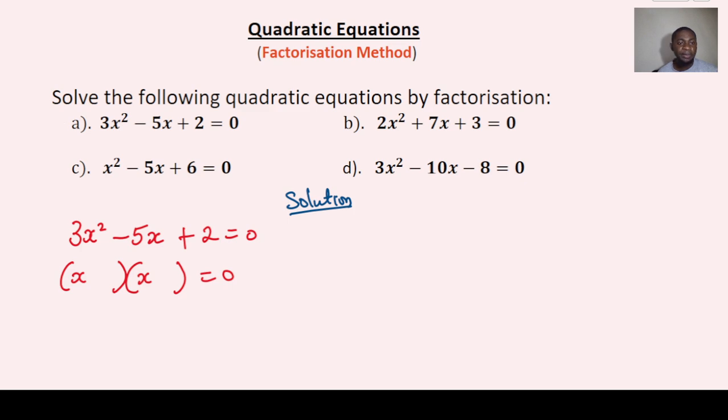Then you go by saying the product of the coefficient of x squared and this constant, that is plus 6. Now that you have the product as plus 6,